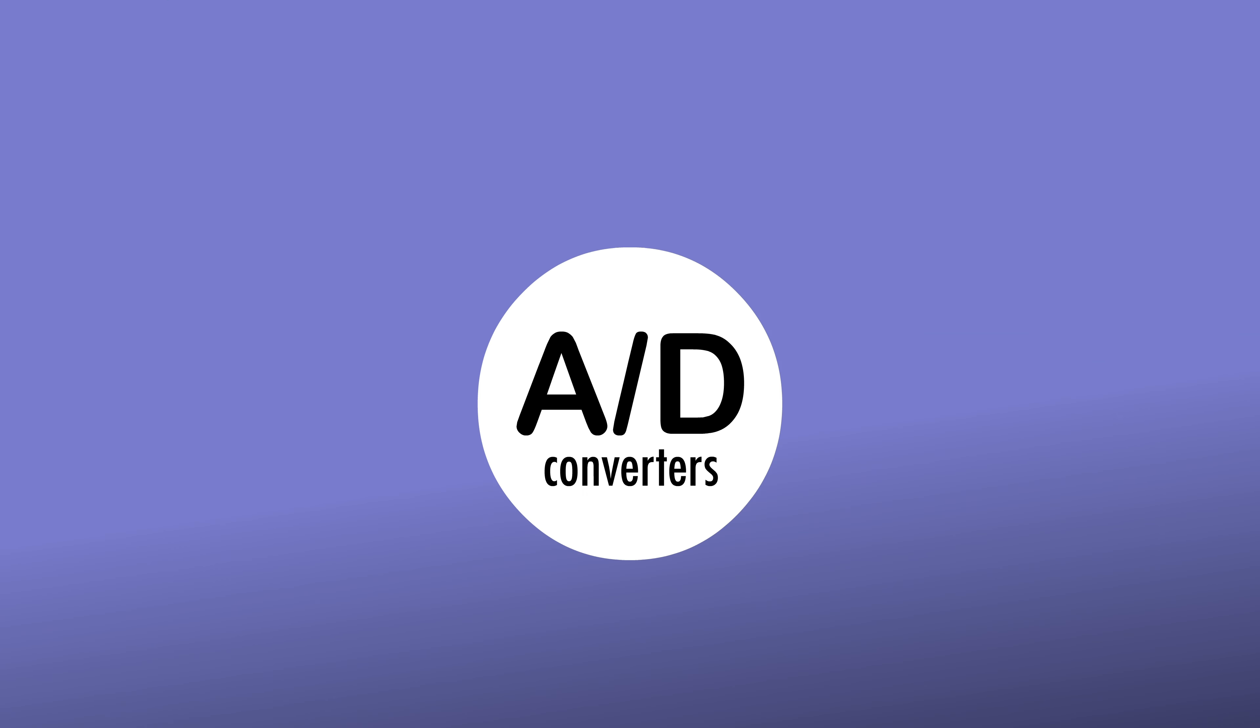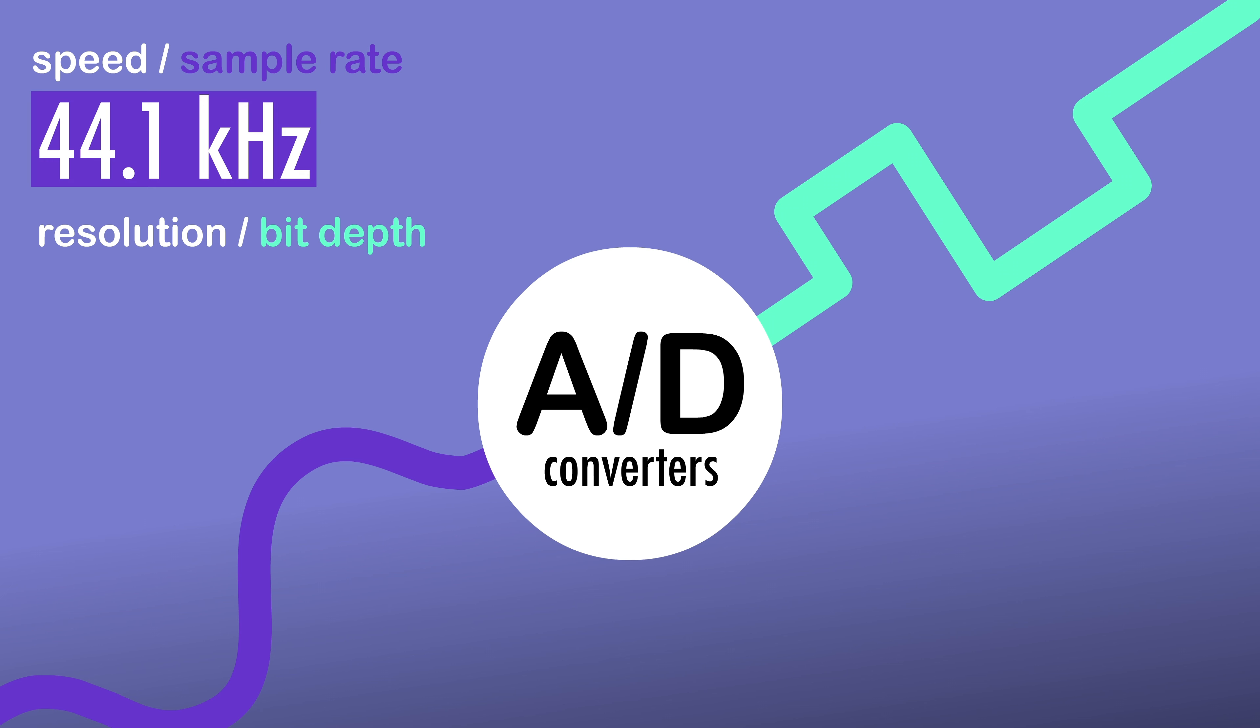So to sum things up, converters sample the incoming analog signals and convert them to digital ones. Their speed and their resolution are the important things to note, and your absolute minimum when dealing with digital audio should be 44.1kHz at 16 bits.